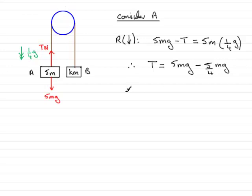So simplifying that, 5mg, that's 20 quarters. 20 quarters take away 5 quarters is going to be 15 quarters, 15 quarters mg newtons is the tension in the string A. And that brings us now to the end of the first part of this question.